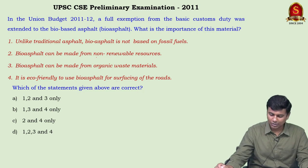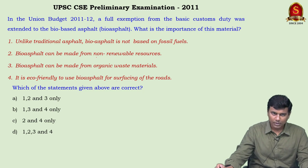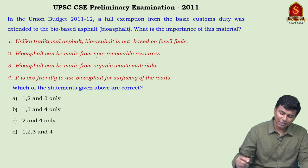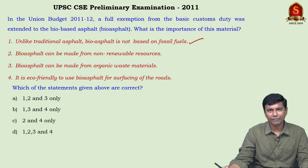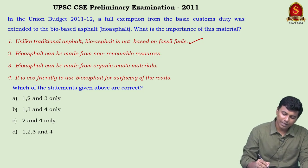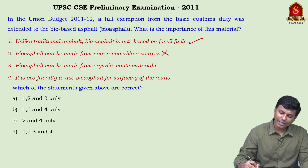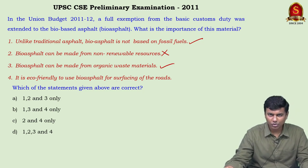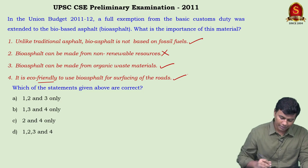Green energy technology — Bio-asphalt: Union Budget 2011-12 granted full exemption from basic customs duty for bio-asphalt. Unlike traditional asphalt, bio-asphalt is not based on fossil fuels — it is manufactured from renewable sources like sugar, molasses, rice, corn, potato starches, or organic waste materials. Statement two (made from non-renewable sources) is wrong. Statements one, three, and four are correct — bio-asphalt is eco-friendly for road surfacing. Answer: B (1, 3, and 4).